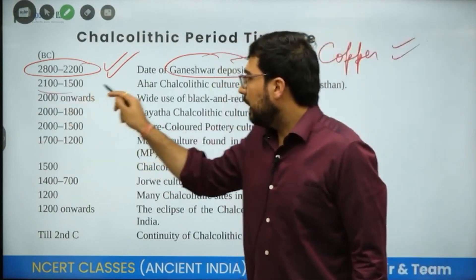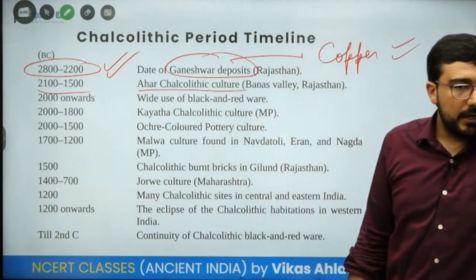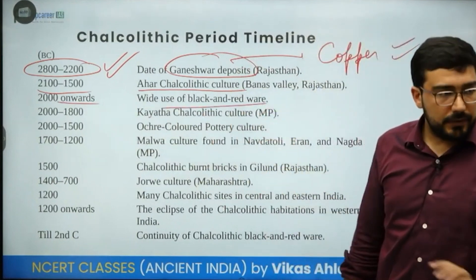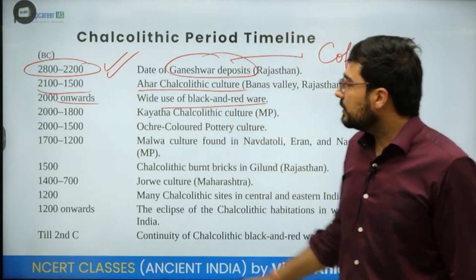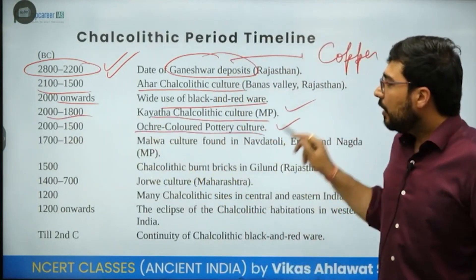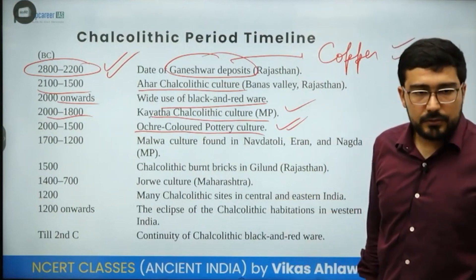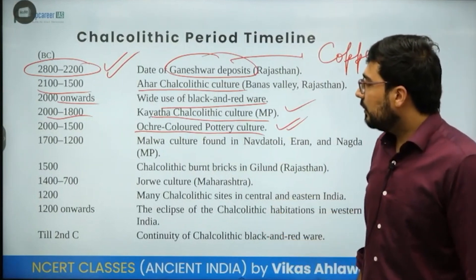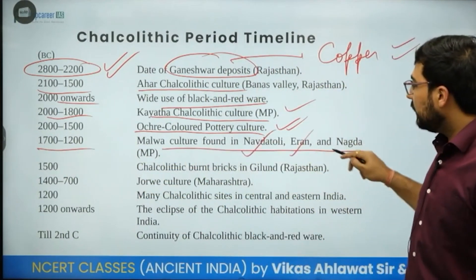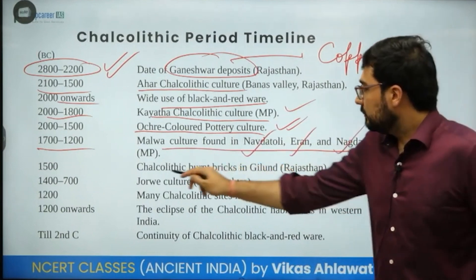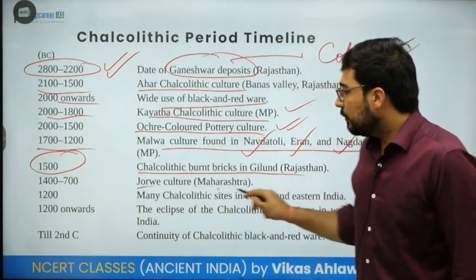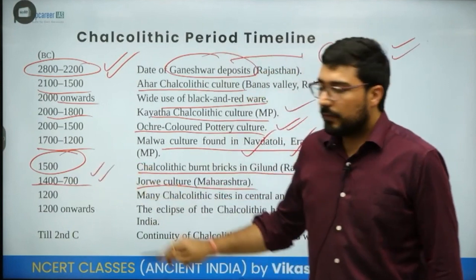The next is Ahar culture, located in the Banas valley of Rajasthan. From 2000 BC onwards we see wider use of black and red ware even among these Chalcolithic cultures. Then comes the Kayatha culture of Madhya Pradesh, followed by the Ochre Coloured Pottery (OCP) culture. Then from 1700 to 1200 BC we see the beginning of Malwa culture including Navdatoli, Inamgaon, and Nagda, the use of burnt bricks in Gilund around 1500 BC, and from Maharashtra — the Jorwe culture.